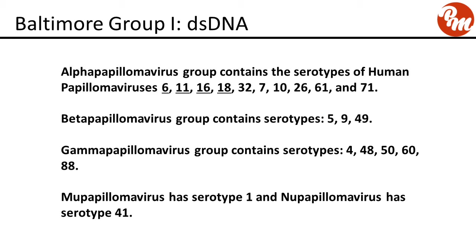In the alpha papillomavirus group, serotypes include HPV 6, 11, 16, 18, 32, 7, 10, 26, 61, and 71. HPV 6 and 11 are low risk for causing cancer, while 16 and 18 are high risk and typically involve the genital area. Beta papillomavirus contains serotypes 5, 9, and 49. Gamma papillomavirus contains serotypes 4, 48, 50, 60, and 88.